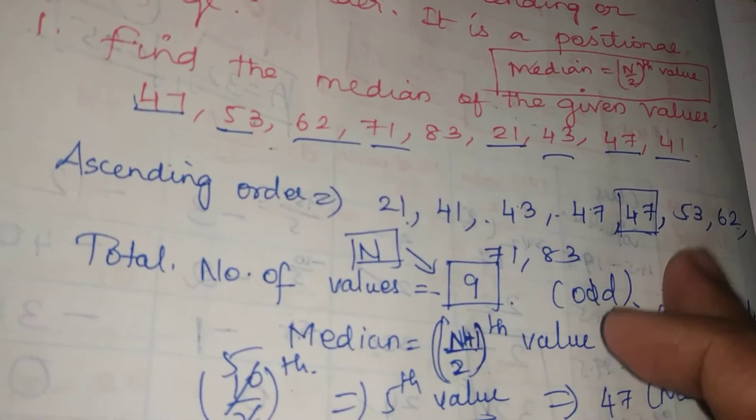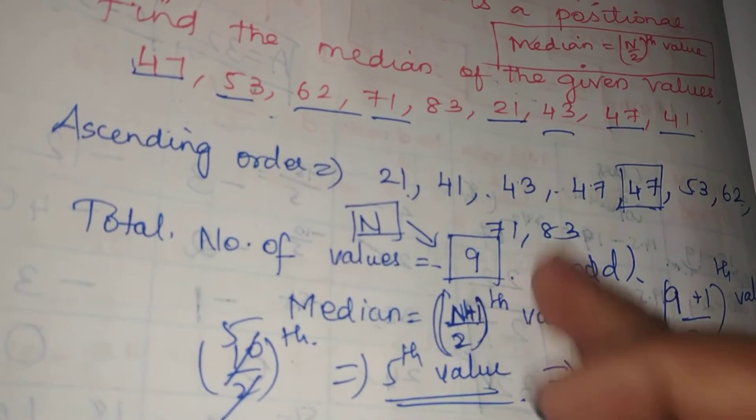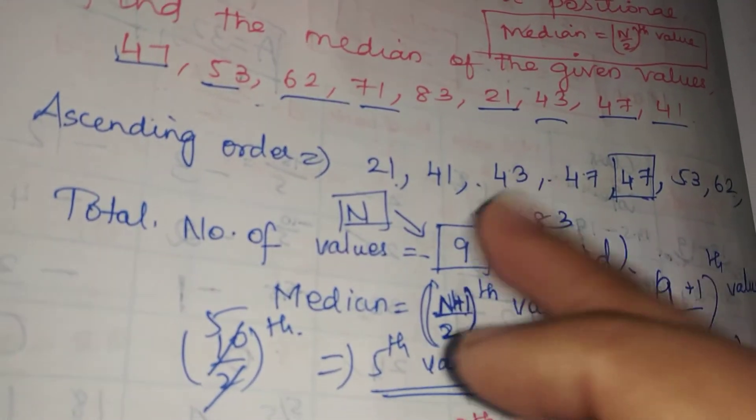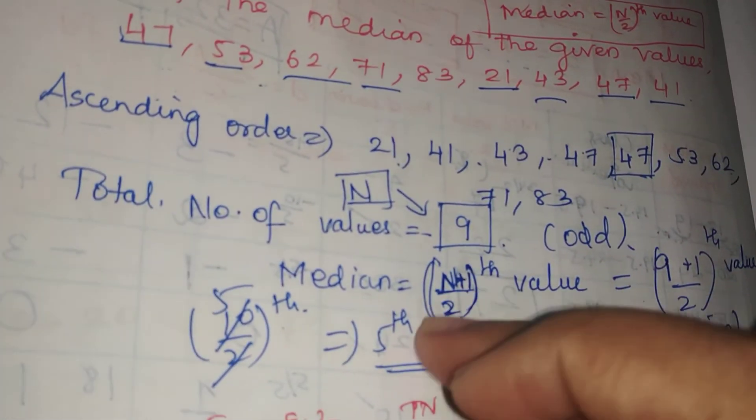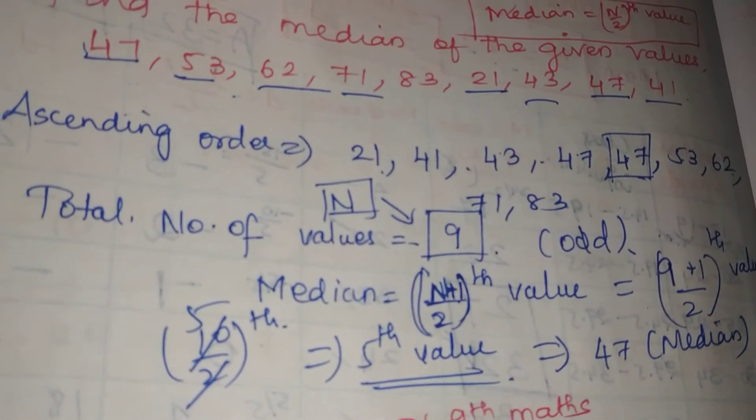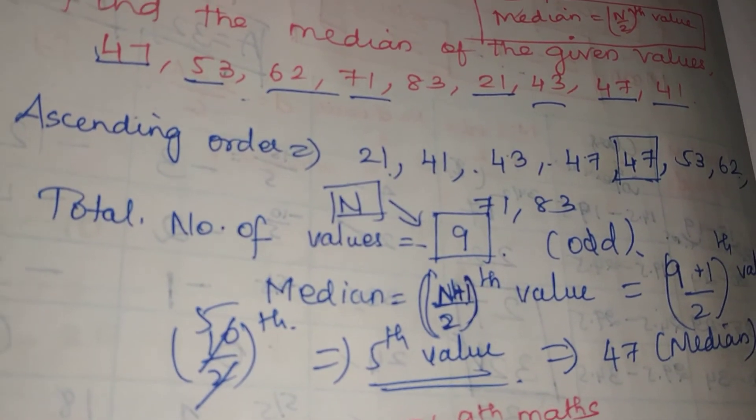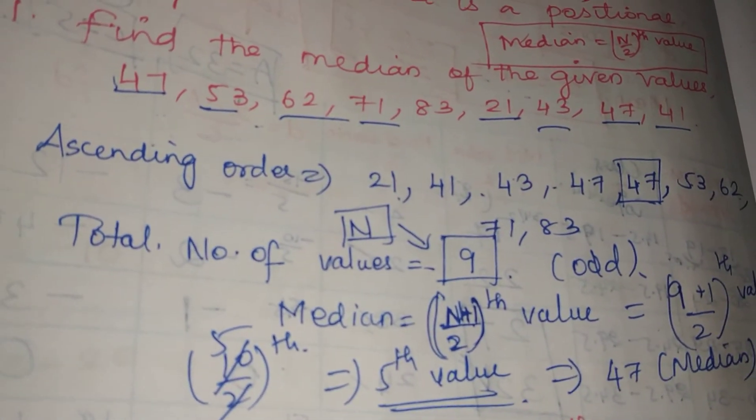To summarize: when you arrange observations in ascending order and count the number of values N, for odd N use (N+1)/2 to find the position of the median. This video is over. Please like, share, and subscribe to the channel. Click the bell icon. Thanks.